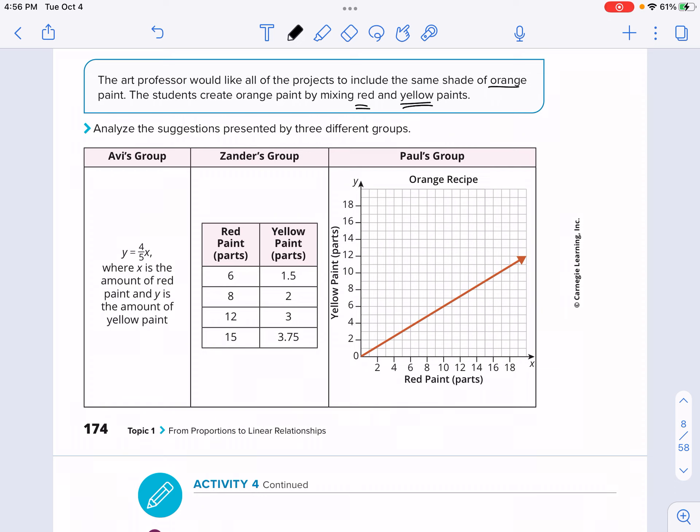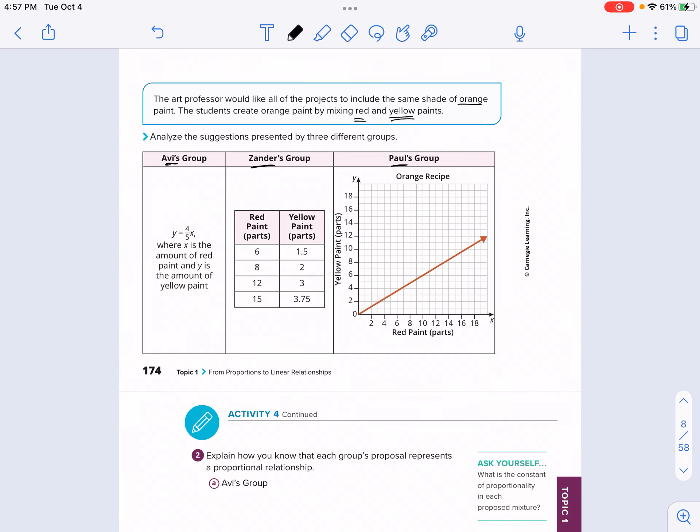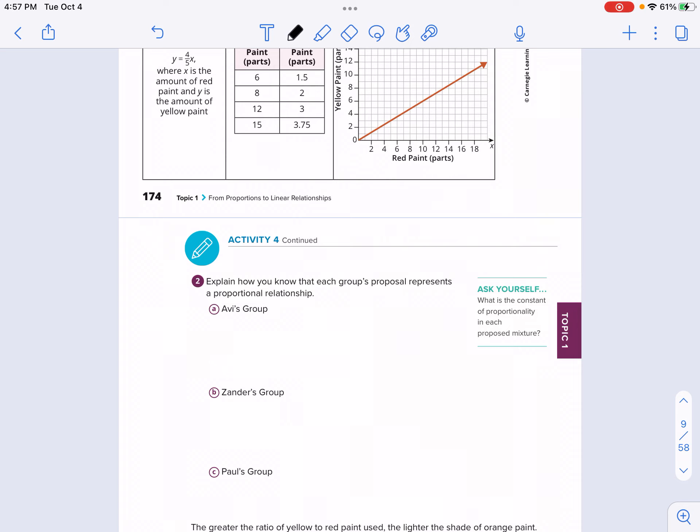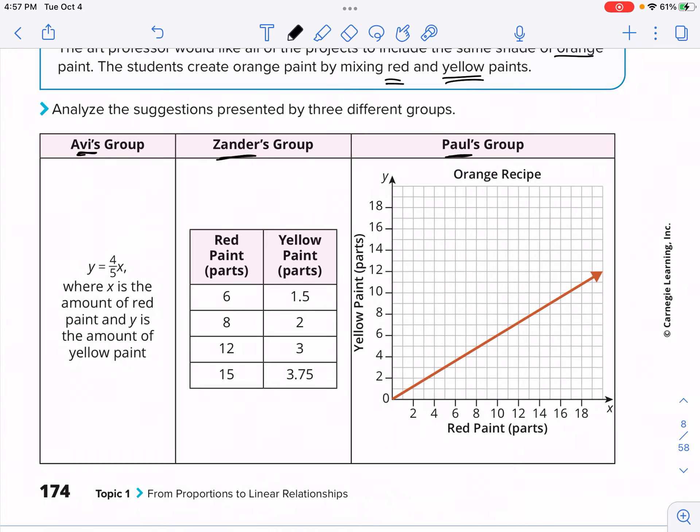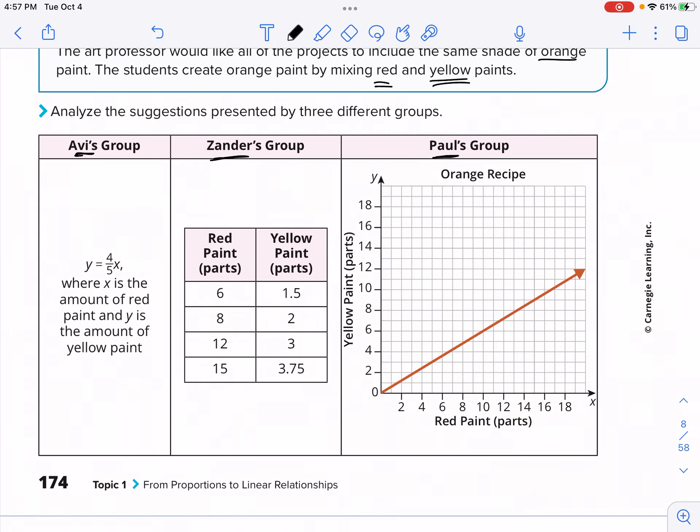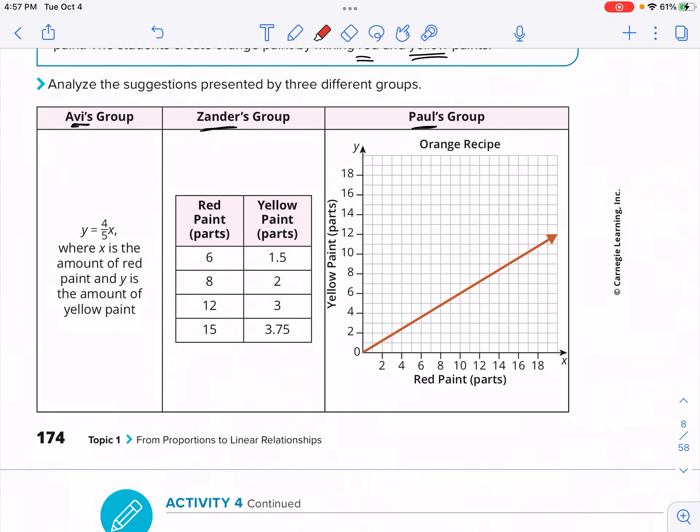And that would either give you something that's more kind of watered down or more sturdy depending on your ratio there. But we're actually going to go to the next context, with this art class. This is the art professor would like all the projects to include the same shade of orange paints. The students create orange paint by mixing, you mix it by using two other colors that is red and yellow. We're going to be using these different representations. First one, this first group, Avi is using an equation. Xander is using a table and Paul is using a line, a graph.